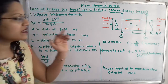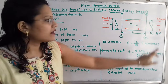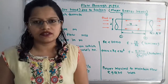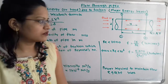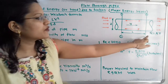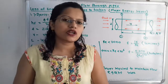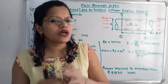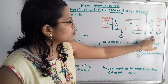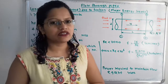Sometimes the velocity is not given directly — instead the discharge or rate of flow Q is given. When Q is given, we calculate the cross-sectional area: A = πD² / 4 for a circular pipe. Then velocity V = Q / A, so we can easily calculate the velocity.